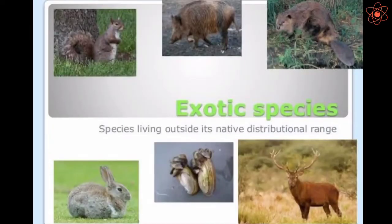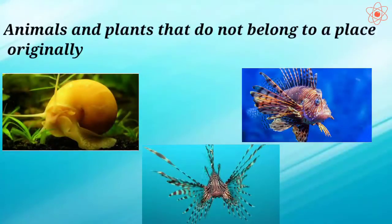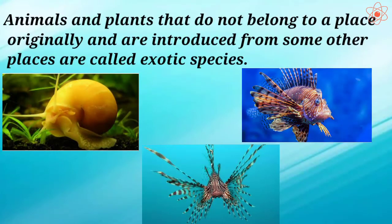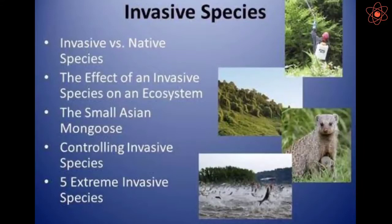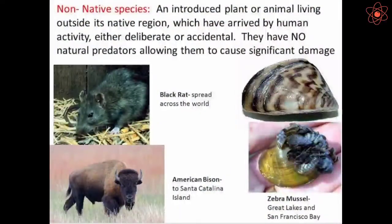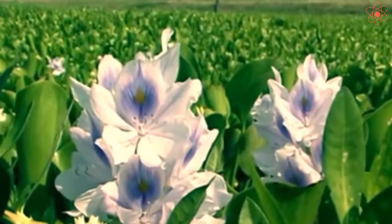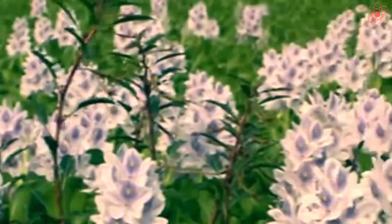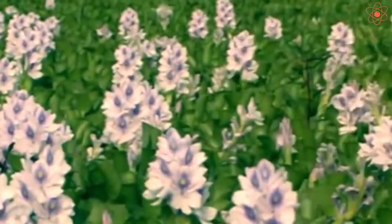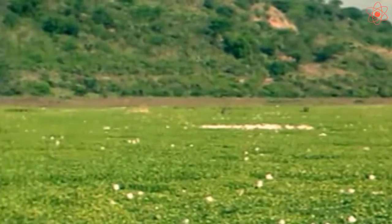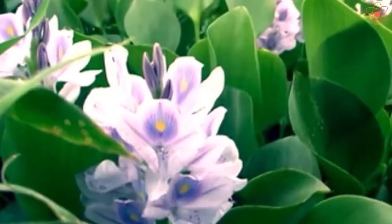Fifth cause: exotic species. Animals and plants that do not belong to a place originally and are introduced from some other places are called exotic species. The introduction of exotic species has adversely affected many native species of plants and animals, depriving them of space and food. For example, water hyacinth, an exotic species introduced in Indian waters, grows very fast and covers the whole water body, threatening the survival of many native aquatic plants of India.